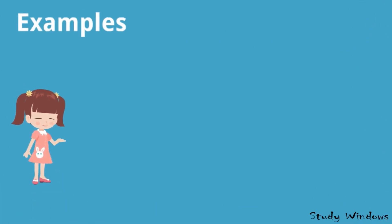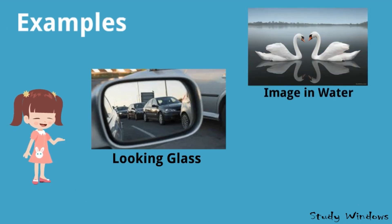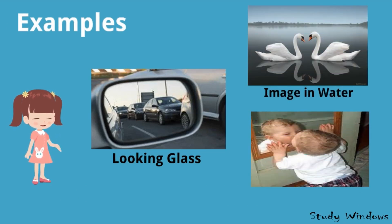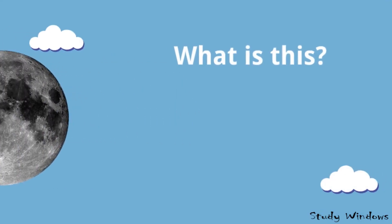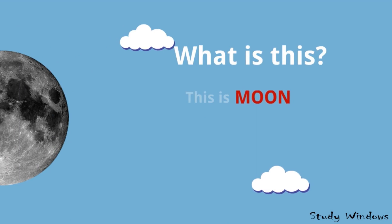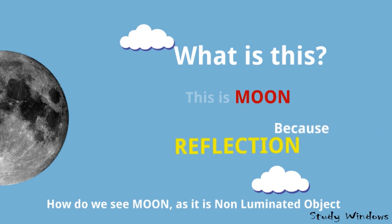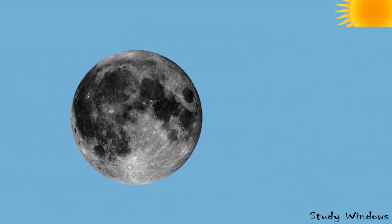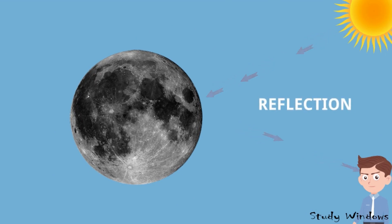Examples of reflection: a looking glass where we can see the back side of a car, an image in water, and an image in a mirror. Look at this image — this is the moon, but the moon is a non-luminous object. So how do we see the moon? Because of reflection! Light comes from the sun, falls on the moon, and is reflected back to our eyes.